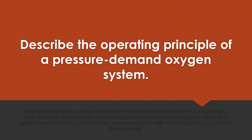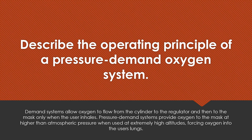Describe the operating principle of a pressure-demand oxygen system. Demand systems allow oxygen to flow from the cylinder to the regulator and then to the mask only when the user inhales. Pressure-demand systems provide oxygen to the mask at higher than atmospheric pressure when used at extremely high altitudes, forcing oxygen into the user's lungs.